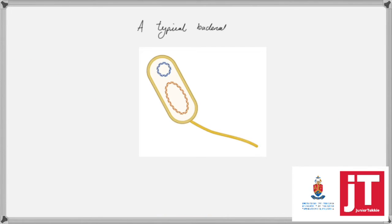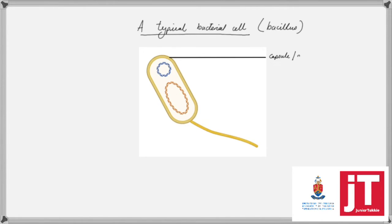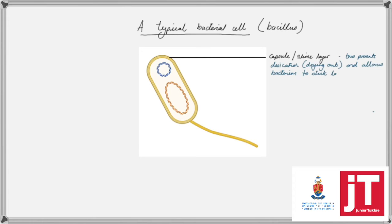The next microorganism is a typical bacillus, which you can see in the structure in front of you. We're going to identify the unique parts, and the first part is the outer slime capsule or slime layer. This helps the bacteria prevent drying out — the biological word we use is desiccation. The slime layer also helps the bacteria stick to surfaces where it will then obviously replicate.